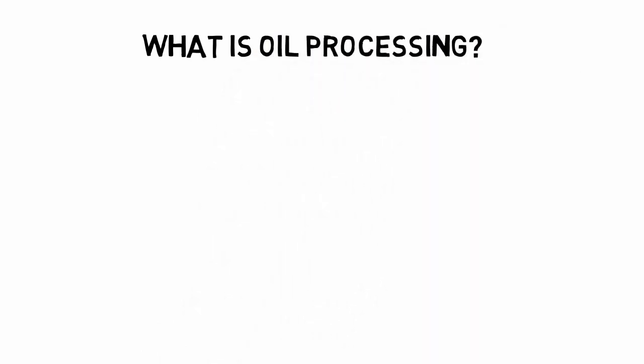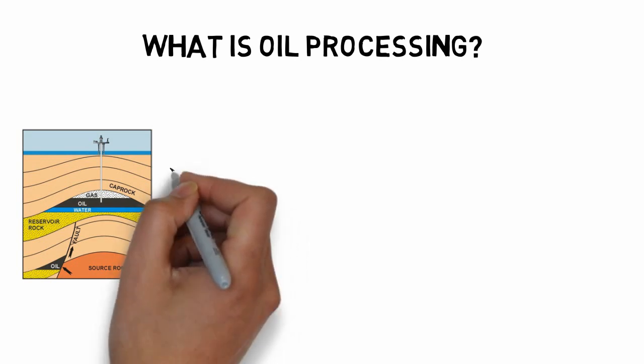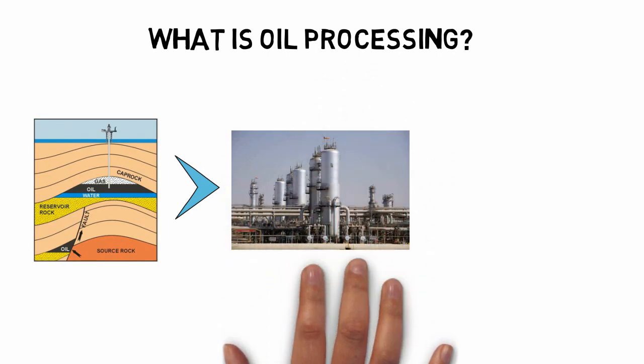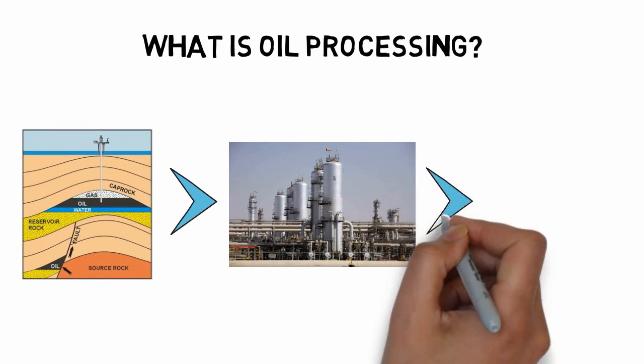Oil extracted from the reservoir have different materials associated with it, like H2S, water and impurities. In order to make this oil sellable, we need to separate these materials by processing the oil through CPF.